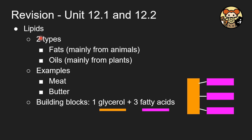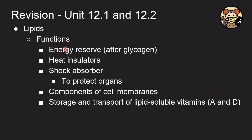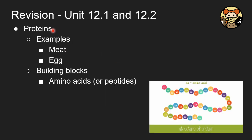Now let's talk about lipids. There are two types: fats and oils. Fats are mainly found in animals, while oils are mainly found in plants. Examples include meat and butter. The building block is one glycerol and three fatty acids, as shown in the cartoon. The functions of lipids include acting as an energy reserve used after glycogen, a heat insulator, and a shock absorber to protect internal organs. Lipids are also a component of cell membranes and are used to store and transport fat-soluble vitamins like vitamin A.